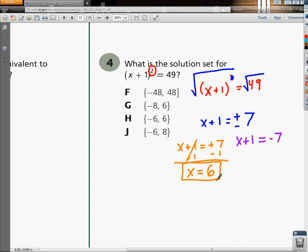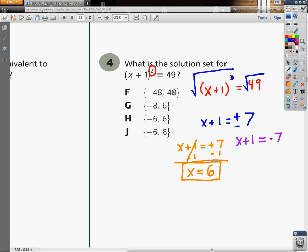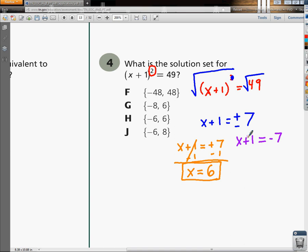And then we now need to do that same thing, but work with our equation over here, where we had the negative 7. So the opposite of this plus 1 is a minus 1, and what you do to one side of your equation, you must do to the other. So now we have x left on the left, and then on this right side, negative 7 plus a negative 1 is going to give us a negative 8.